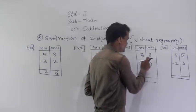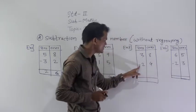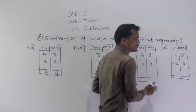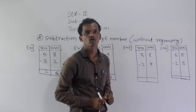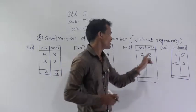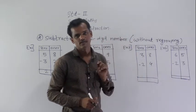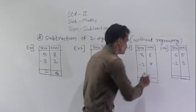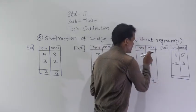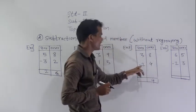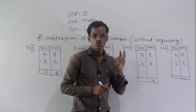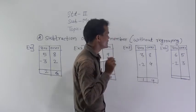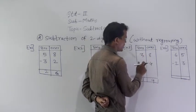Next example: 38 minus 24. Always start from the ones place. 8 minus 4 — count 4 fingers backward from 8. Before 8: 7, 6, 5, 4. So 4 is the difference between 8 and 4. Then the tens place: 3 minus 2. Before 3: 2, then 1. So 3 minus 2 equals 1. Therefore, 14 is the difference between 38 and 24.